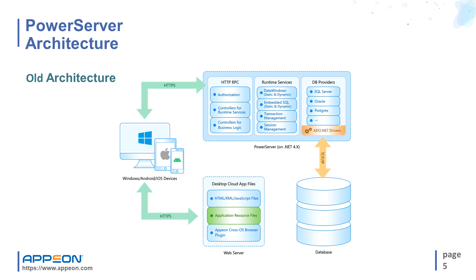Before going through the changes in architecture of PowerServer 2021, let's first take a look at the architecture of the previous generation. On the client side, you require a web browser or the IWA component. On the server side, to run a web app, you require a PowerServer that works on top of IIS and the .NET framework. The visual components of the application are downloaded from the web server and run on the client machine, while the application server handles database communication, including execution of SQL and transaction management.